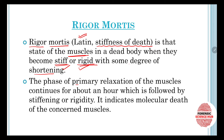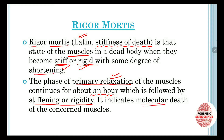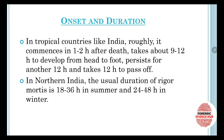The primary phase is the relaxation phase of the muscles. Initially, for about an hour, the body is not stiff — the muscles are relaxed. After this phase passes, after about one hour, this is followed by stiffening or rigidity. After one hour the muscles start to become stiff or rigid, indicating molecular death of the concerned muscles.